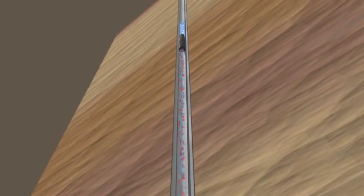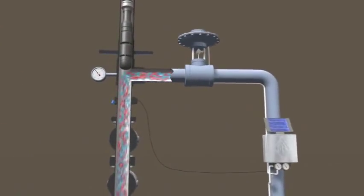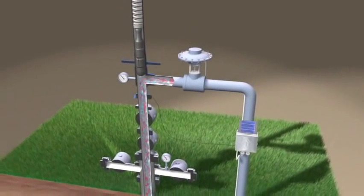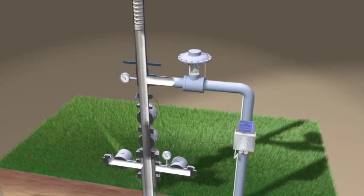The plunger lifts the entire slug to the surface with minimal fallback. The controller detects the plunger arriving at the surface, and the well is allowed to flow. After a period of time, the controller closes the motor valve, allowing the plunger to fall. These cycles are automatically repeated several times each day.